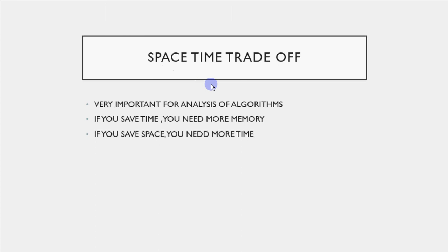When you are working with programs, you're developing algorithms. There is a common term used many times called space time tradeoff. It's very important for analyzing the algorithms. Here we say that if we save space, that is memory, we need to put more time in execution of the program. And if you want less time to be there, you need more space for that.